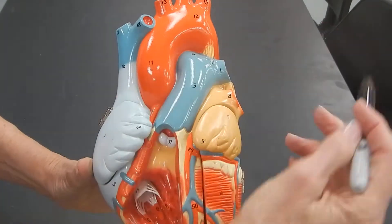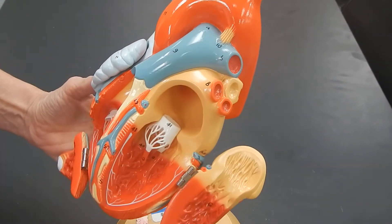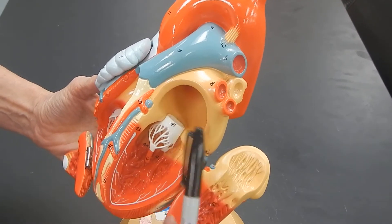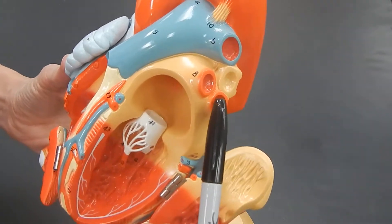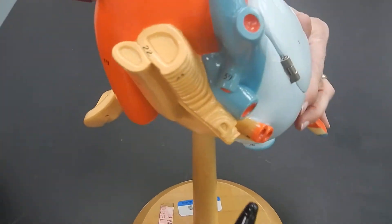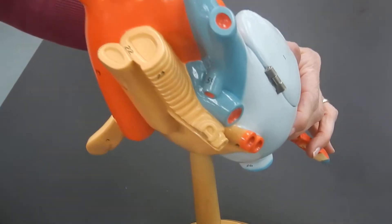Blood is going to go to the lungs, and when it comes back, it's going to come back to the left atrium, and it comes back through these four red blood vessels. These two here, and these two over here. All four of these are pulmonary veins.